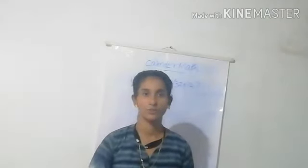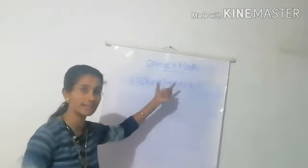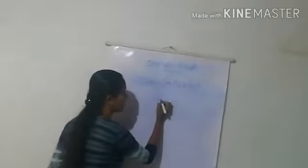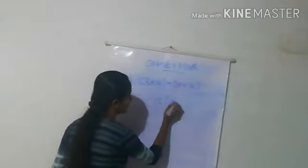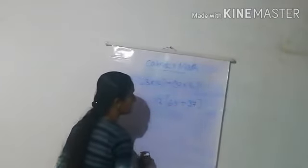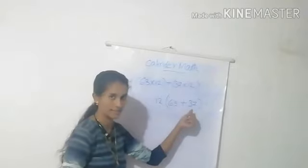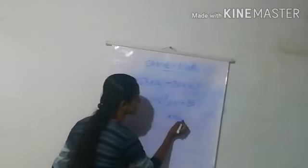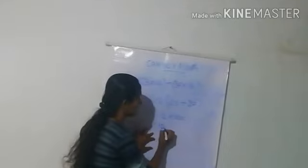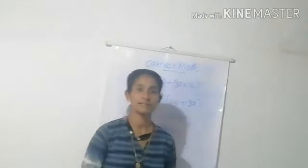Now let's do another example using the distributive property. If we want to find 63 times 12 plus 37 times 12, we notice that 12 is common to both terms. We first add 63 plus 37 which gives 100, and then multiply by 12 to get 1200 as our result.